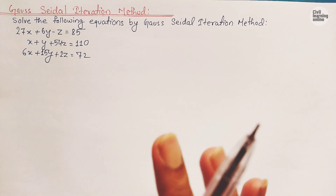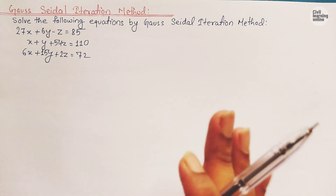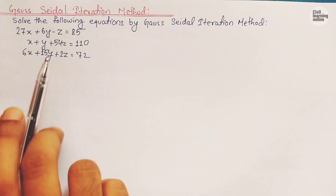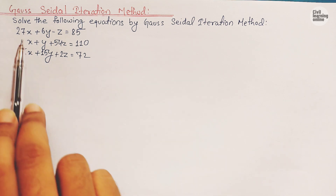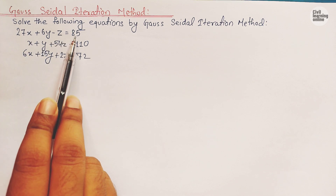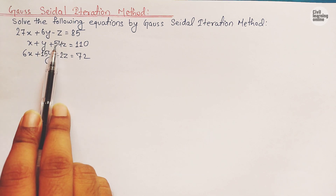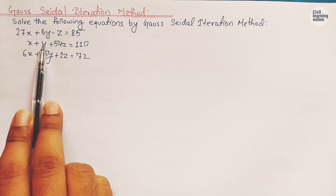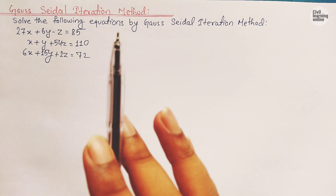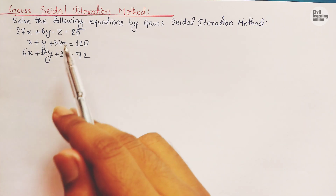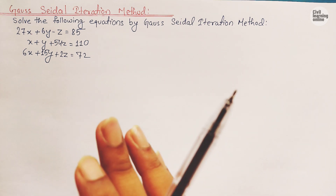While solving any numerical based upon the Gauss-Seidel iteration method, there are a few working rules to follow. The first thing we need to do is check that in each and every equation, the coefficient or magnitude of the diagonal variable must be the highest. We need some arrangement here - the equations must satisfy the diagonal dominance property.